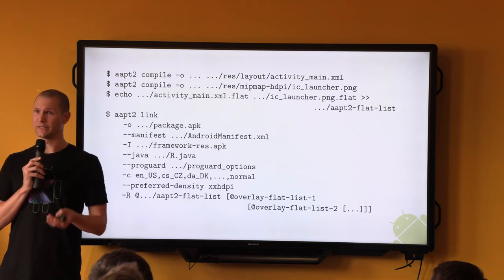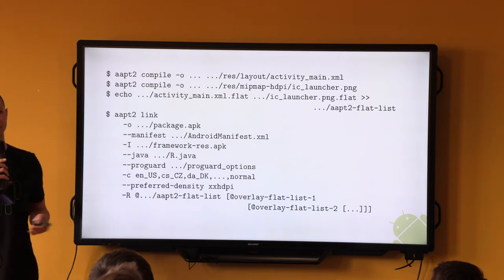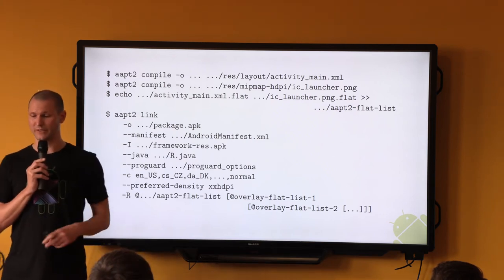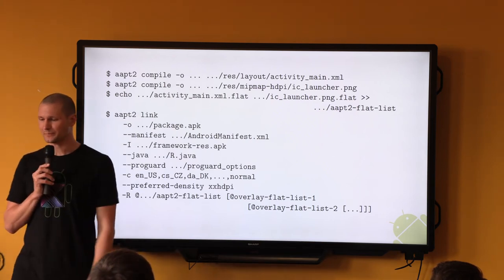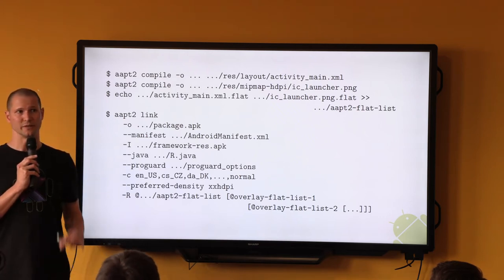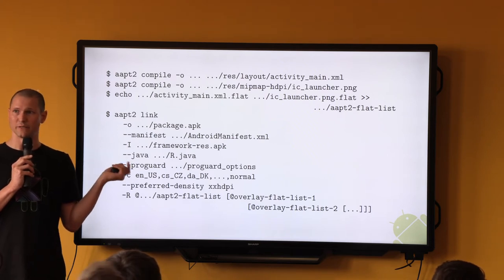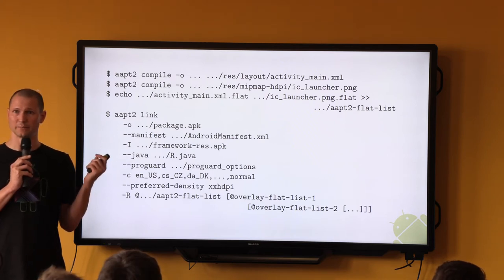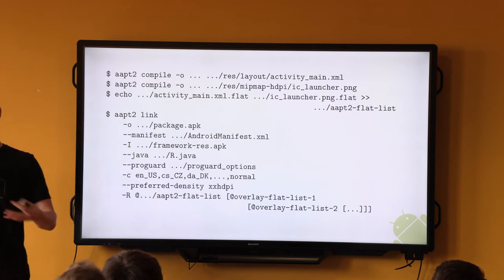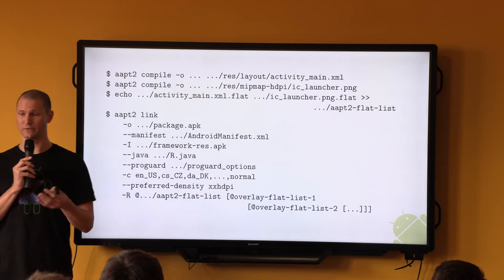Technically we're using AAPT2 these days since Android Studio switched to AAPT2 as the default just a few months ago. The commands shown here are the first steps you take when you create an APK file. Notice how there are individual compilation steps for the different resources, and then at the end a final link step which brings all the pre-compiled resources together.